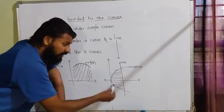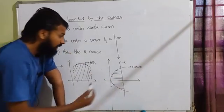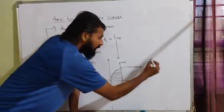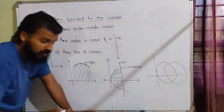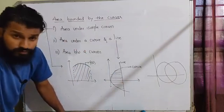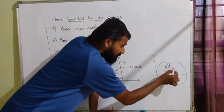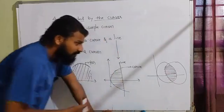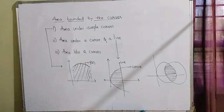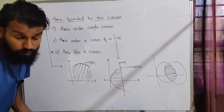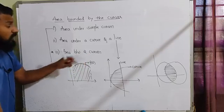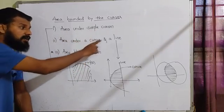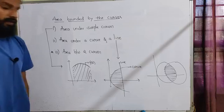For the second type — area under a curve and a line — let's say I have a parabola and a line. There is an area between these two things, and that is what we call area under a curve and a line. The third type, area between two curves, such as two circles, has been removed from your syllabus due to COVID deletions. So we are going to study only the first two types.